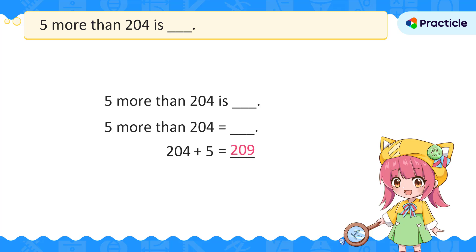Yes, 209. Let's put this number in the blank. 5 more than 204 is 209. See how changing this English sentence into a mathematical equation makes things easier?